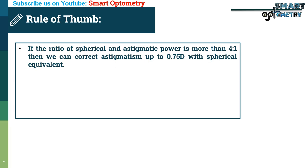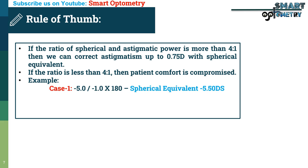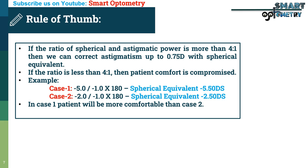Rule of thumb for soft toric contact lenses: if the ratio of spherical to astigmatic power is more than 4:1, then we can correct astigmatism up to 0.75D with spherical equivalent. If the ratio is less than 4:1, patient comfort is compromised. For example, Case 1: -5.00 / -1.00 × 180°, spherical equivalent power is -5.50D spherical. In Case 1 the patient will be more comfortable than in Case 2 because the ratio is more than 4:1. In modern practice, however, this rule is not strictly followed.